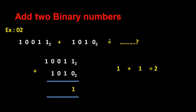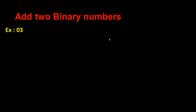I can write 1 0, and then I put 0 here and I pass 1 here. And 0 plus 0 is 0, but I got 1 here, so 1. And 0 plus 1 answer is 1, and I have another 1, so my answer is 1 1 1 0 1.